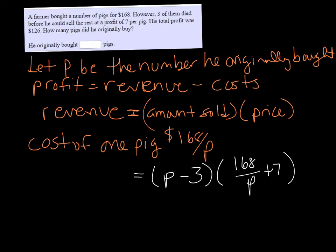That's going to equal our revenue, and we want that to equal a number, not another variable. But we can do that because we know that his total profit was $126 and that the cost was $168. So to solve for revenue, you would just add $168 and $126.